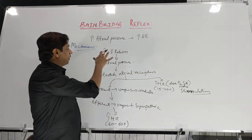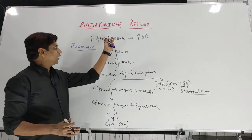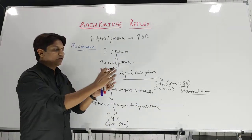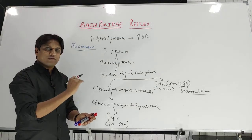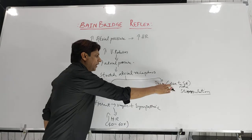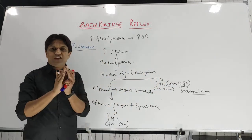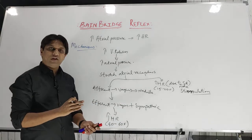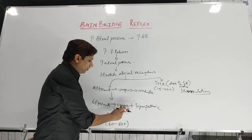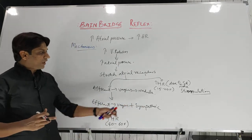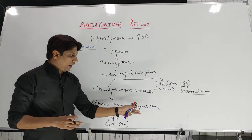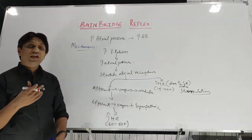To summarize the reflex: increase in central venous pressure or atrial pressure causes around 75% increase in heart rate. Of that, 15 to 20% is due to direct SA node stimulation from atrial stretching, and 40 to 60% is mediated through the reflex pathway — afferent via vagus nerve, center in the medulla, efferent via vagus and sympathetic fibers. The medulla inhibits vagal flow and increases sympathetic discharge, ultimately increasing heart rate.